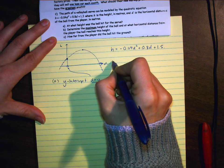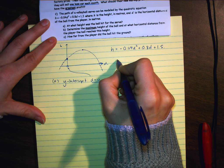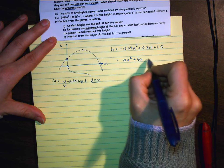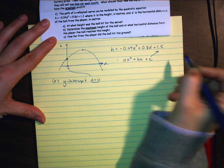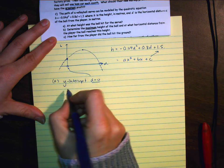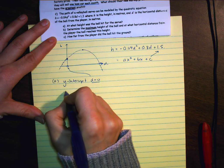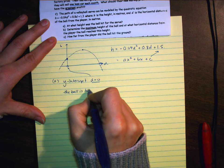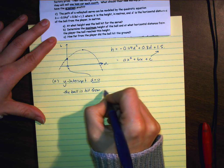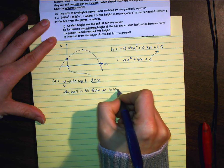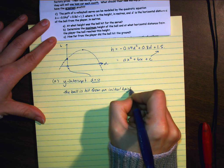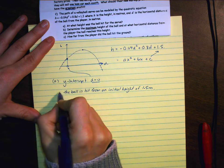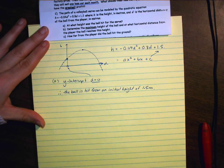So this right here is in standard form. If we look at it, this is ax squared plus bx plus c. That is my y-intercept. So therefore, the ball is hit from an initial height of 1.5 meters. So that would be the answer to A. That would be the reasoning behind it.